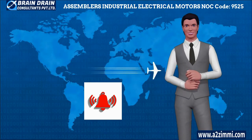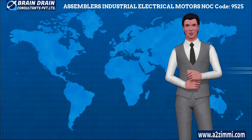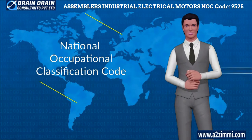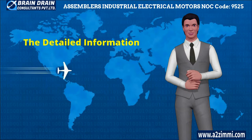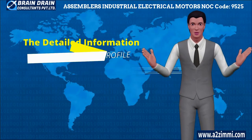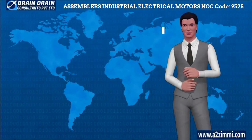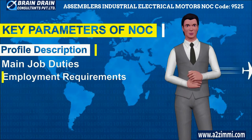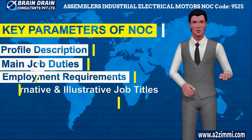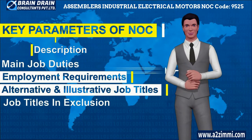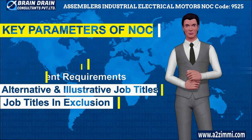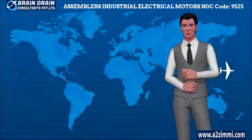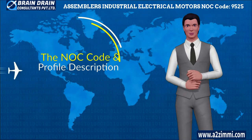In Canada, every skill profile has a unique code called the National Occupational Classification Code, or NOC code. This code tells us about the detailed information associated with a profile, including key parameters like profile description, key responsibility area, main job duties, employment requirements, alternative and illustrative job titles, and job titles in exclusion. First of all, let's see the NOC code and its description for the profile of this video.